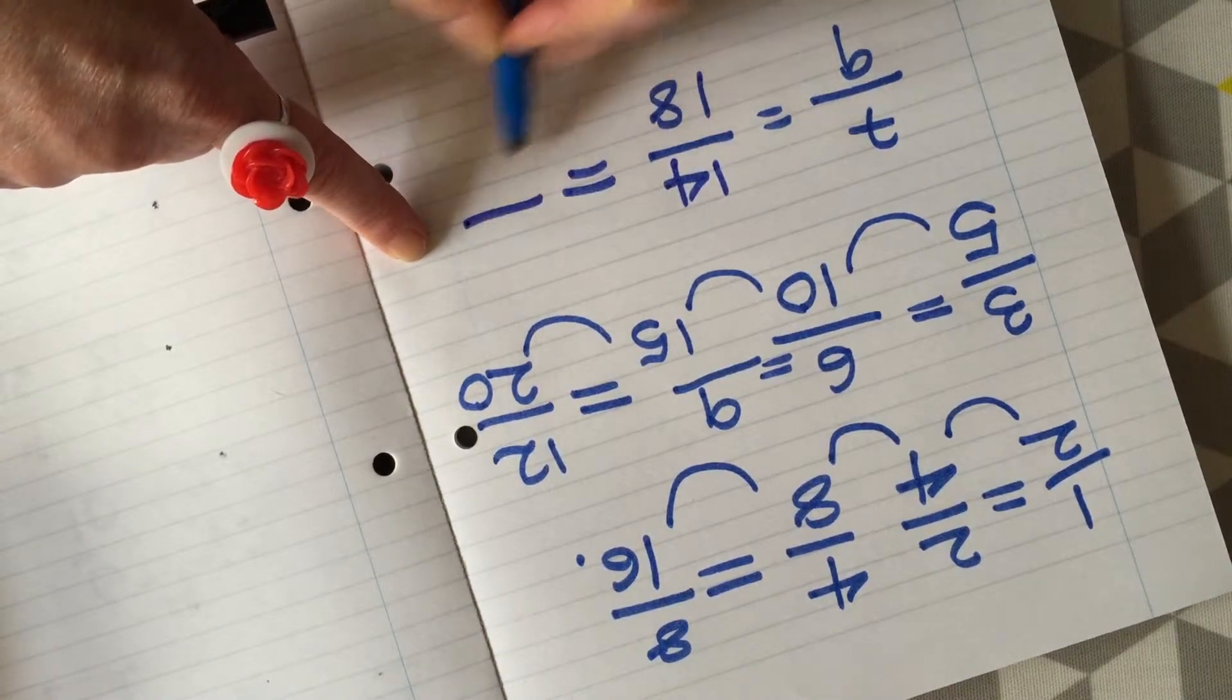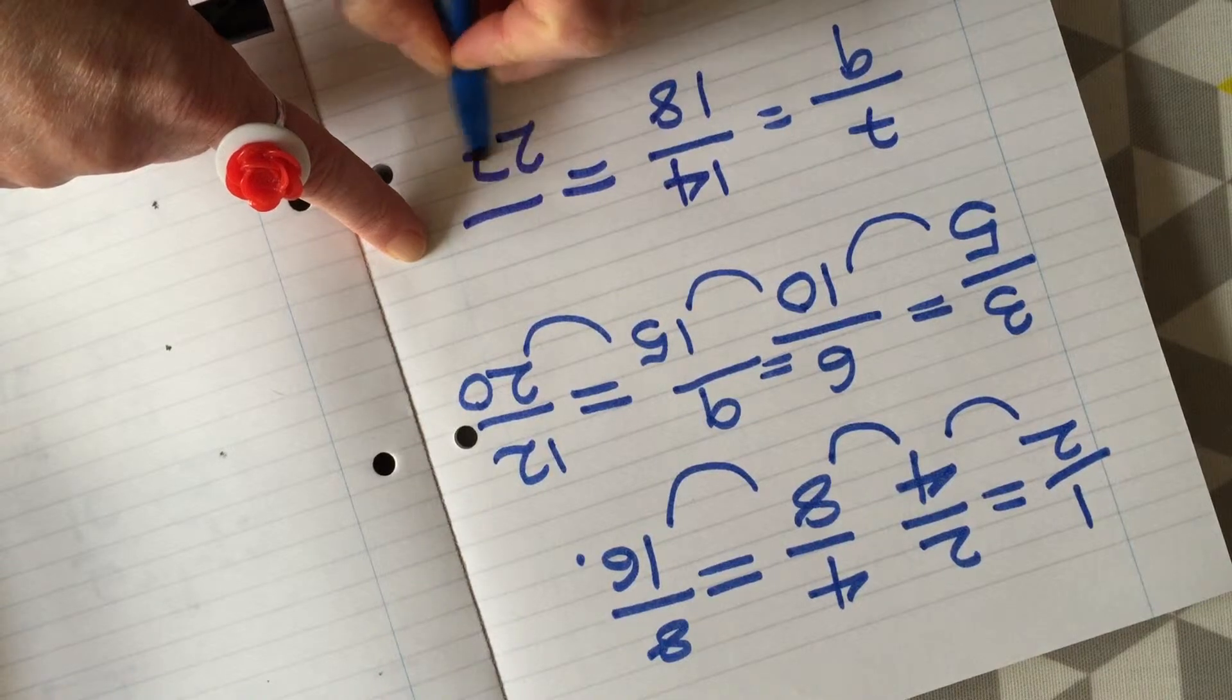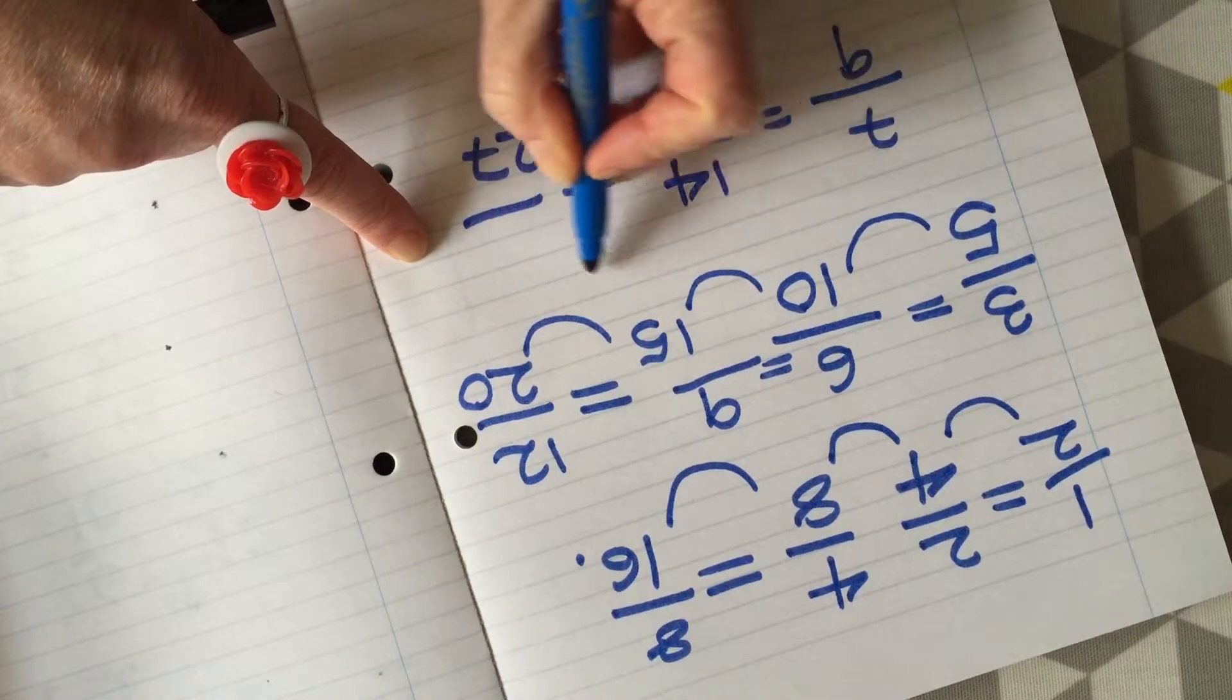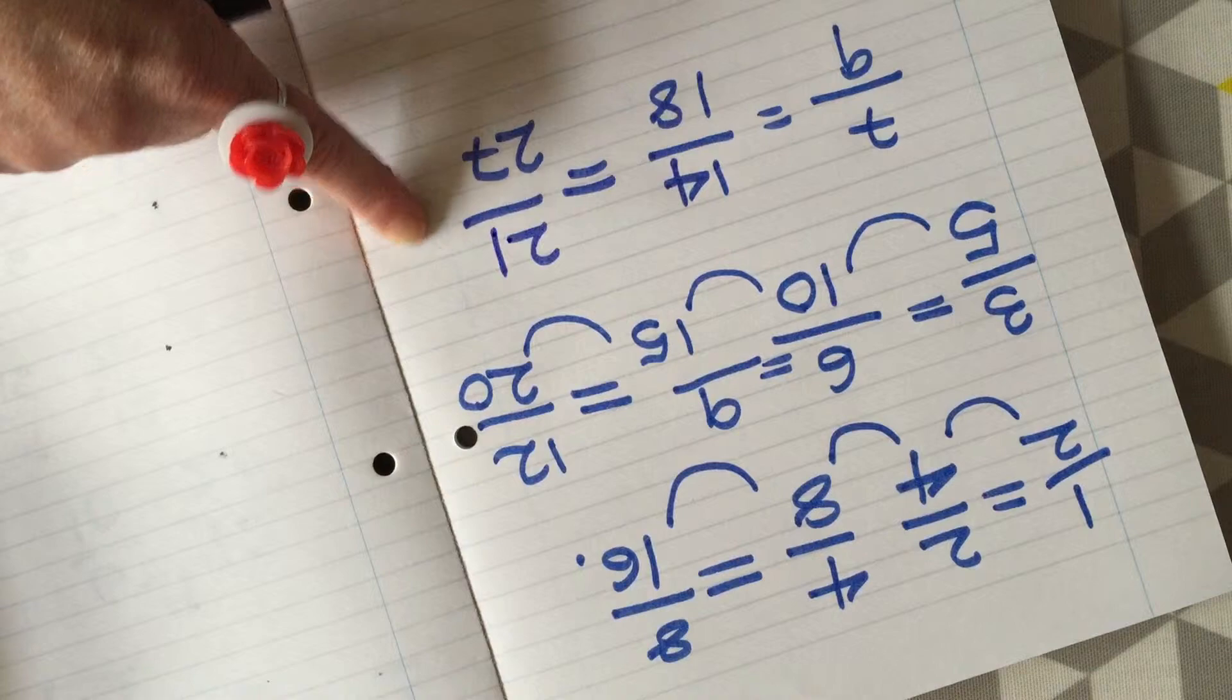So that number at the bottom there becomes 27 and the top would therefore become 21. Does that make sense?